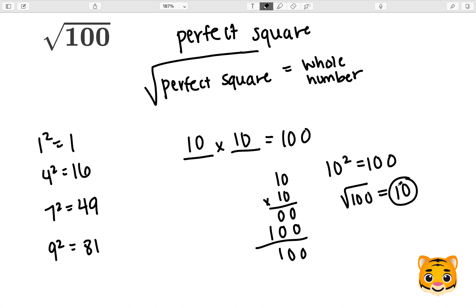So very simply, the square root of 100 is just 10. There is no estimation required, no further simplification.